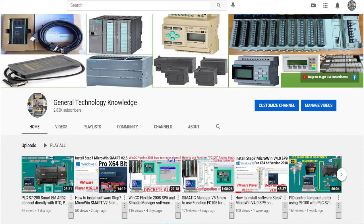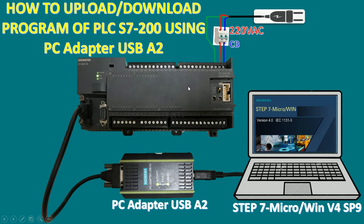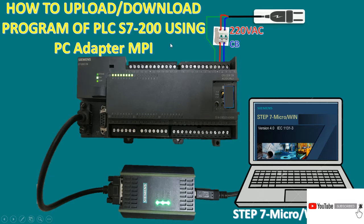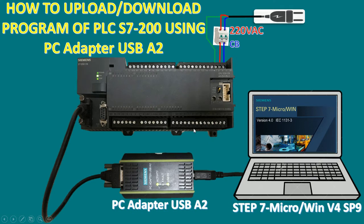Hello everyone, welcome back to my YouTube channel, General Technology Knowledge. Today I would like to show and share how to upload and download a program from the PLC S7-200 CPU 226 by using the PC Adapter USB A2. In a previous video we already learned how to communicate, set up, and download and upload programs using the PC Adapter MPI, so today I will show how to set up communication between our PC and the PLC S7-200 using PC Adapter USB A2.